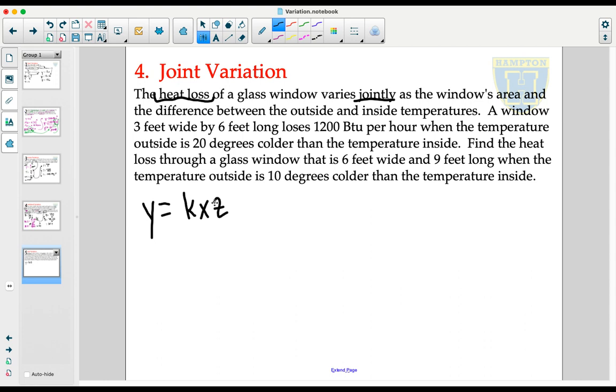Using variables more suited to this problem, we can say that L, the loss of heat, varies jointly with the area of the window, represented by A, and times D, the difference between the outside and the inside temperatures.